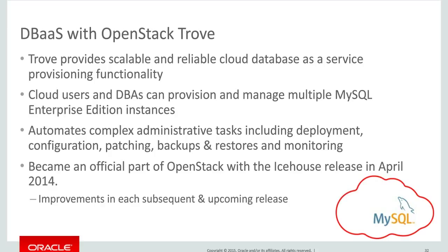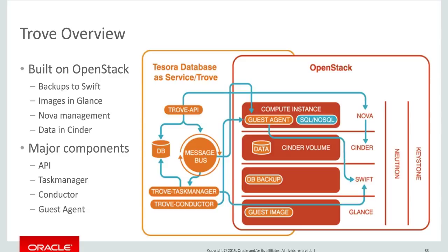Trove really builds on OpenStack to provide a self-service, elastic, easy-to-use way to provision database servers. To give you an overview of how Trove works: it's built on top of OpenStack and leverages all the core services — for backups it stores images in Swift, for machine images it uses Glance, for provisioning compute resources it uses Nova, and for block storage volumes it leverages Cinder.